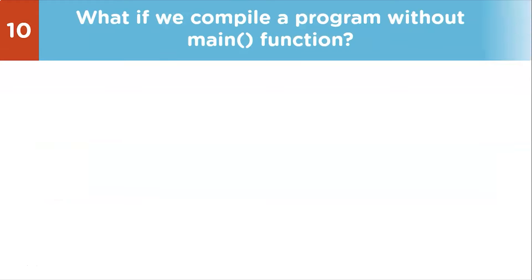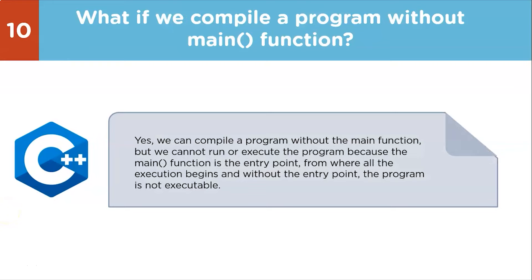Next question: what happens if we compile a program without the main function? Yes, we can compile a program without the main function, but we cannot run or execute it. The main function is the entry point from where all execution begins, and without it the program is not executable.